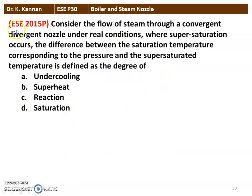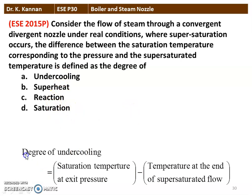Next question from the 2015 question paper: consider the flow of steam through a convergent-divergent nozzle under real conditions where supersaturation occurs. The degree of undercooling is defined as the saturation temperature corresponding to the exit pressure minus the actual temperature at the end of the supersaturated flow.